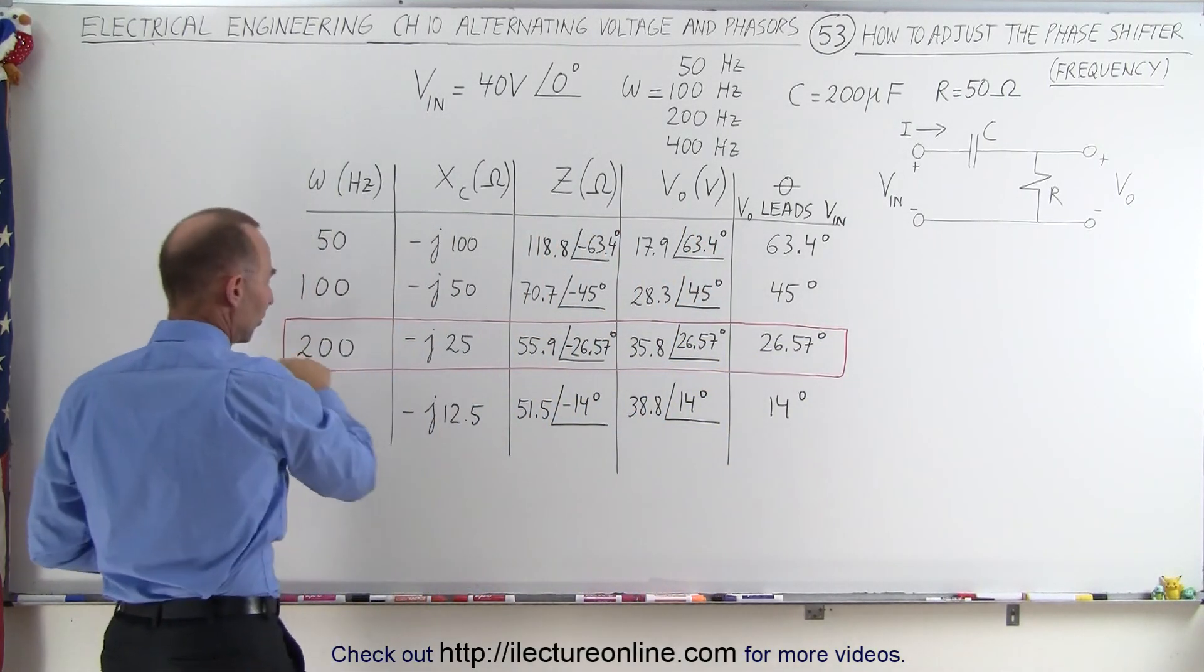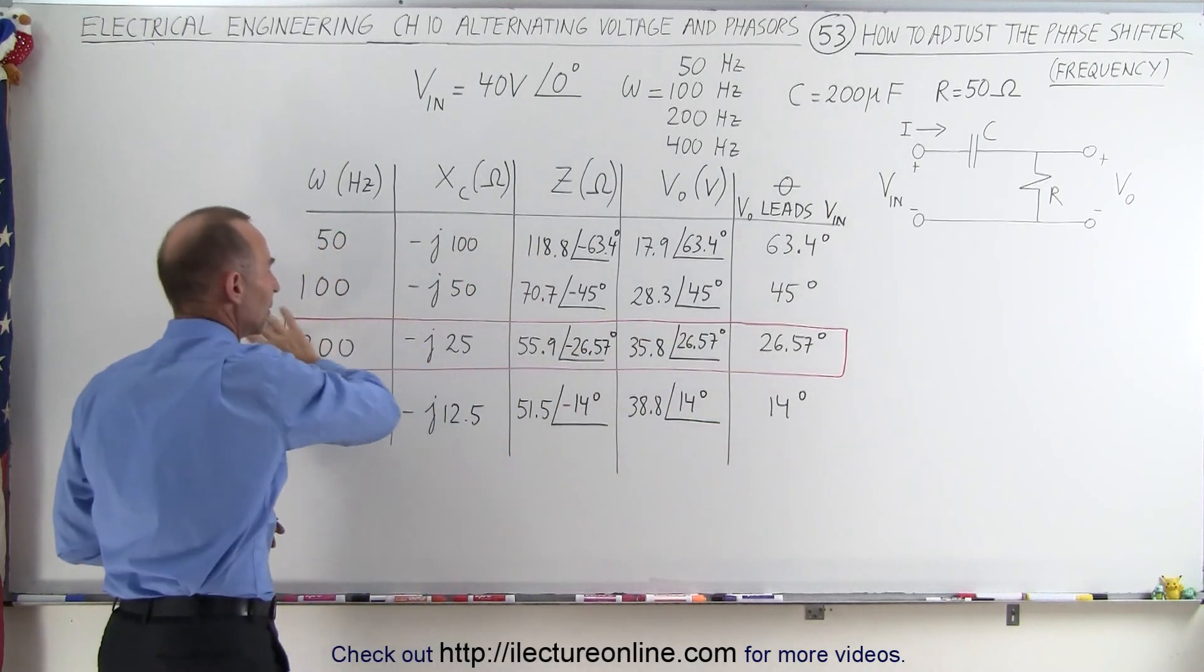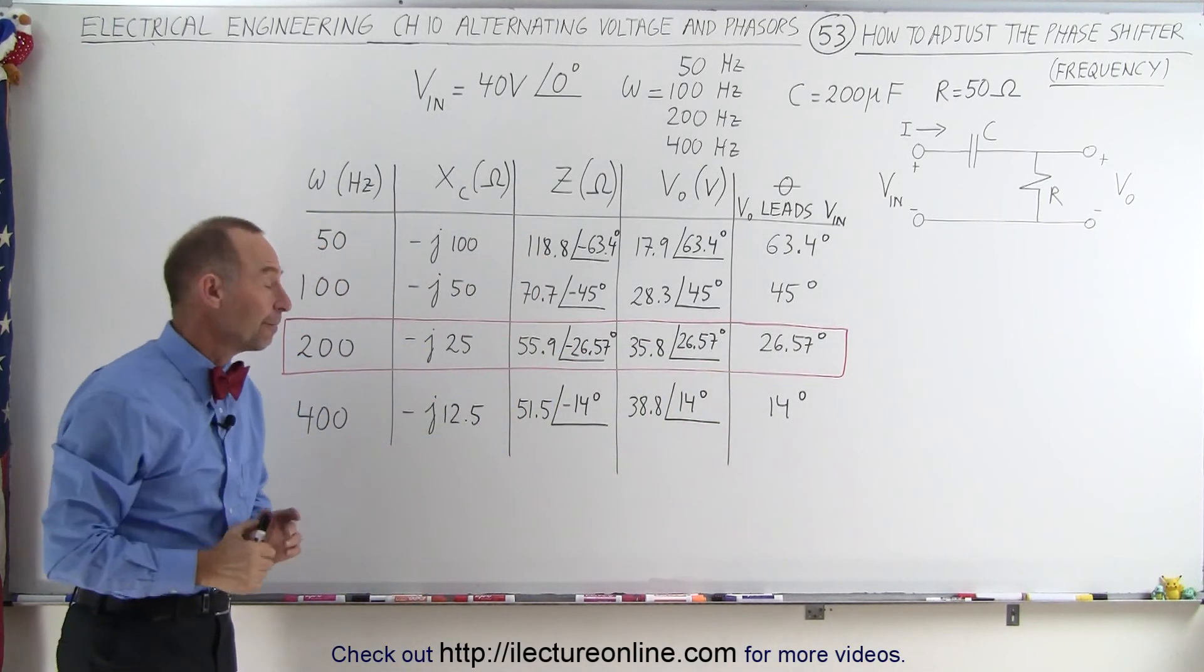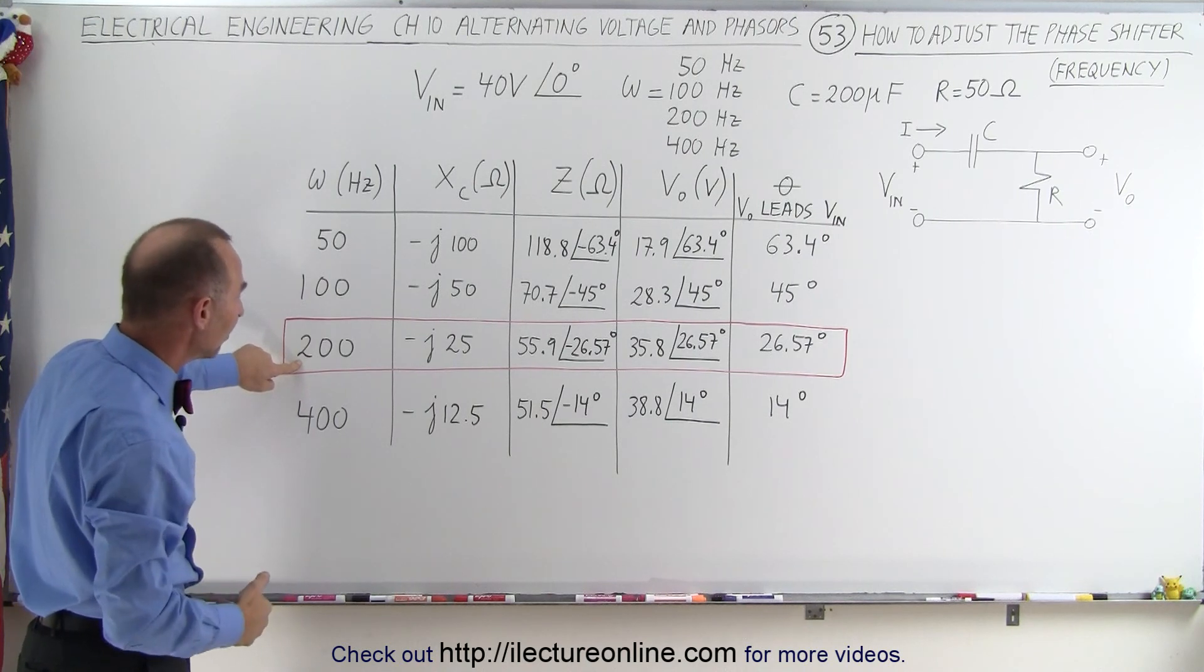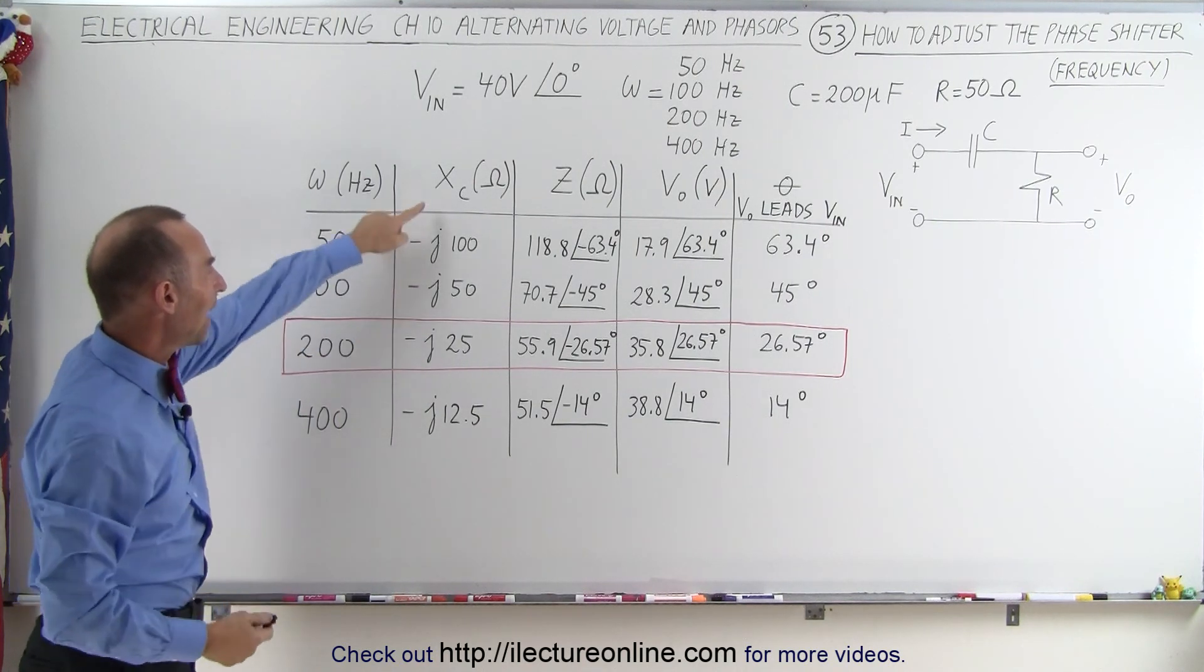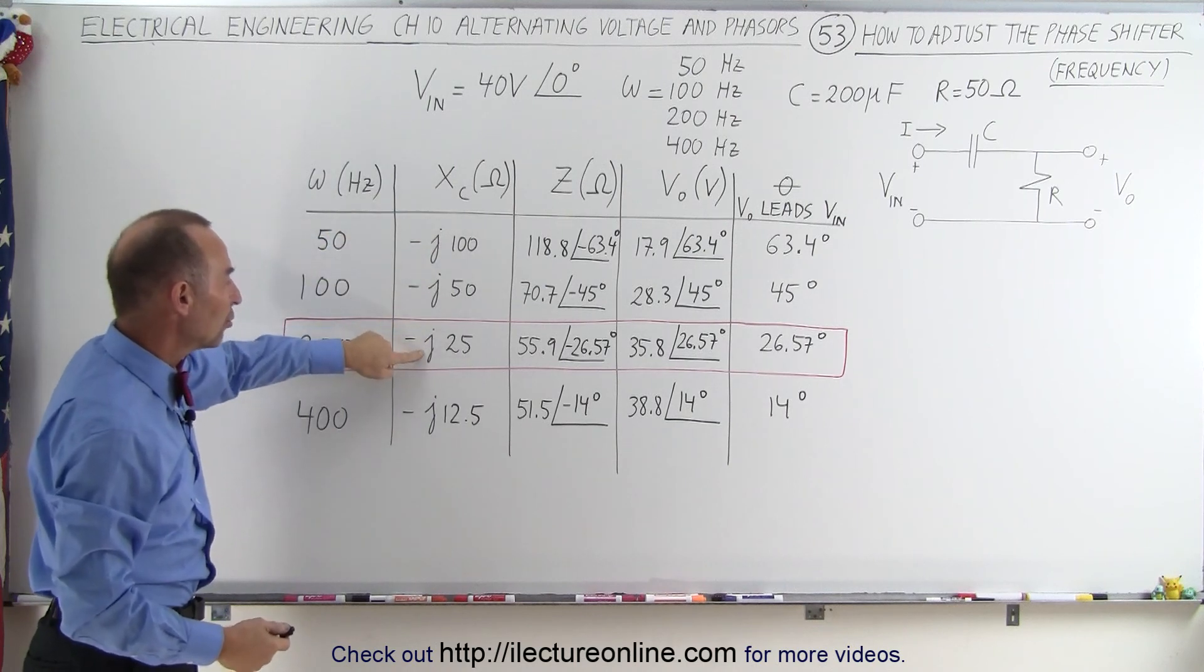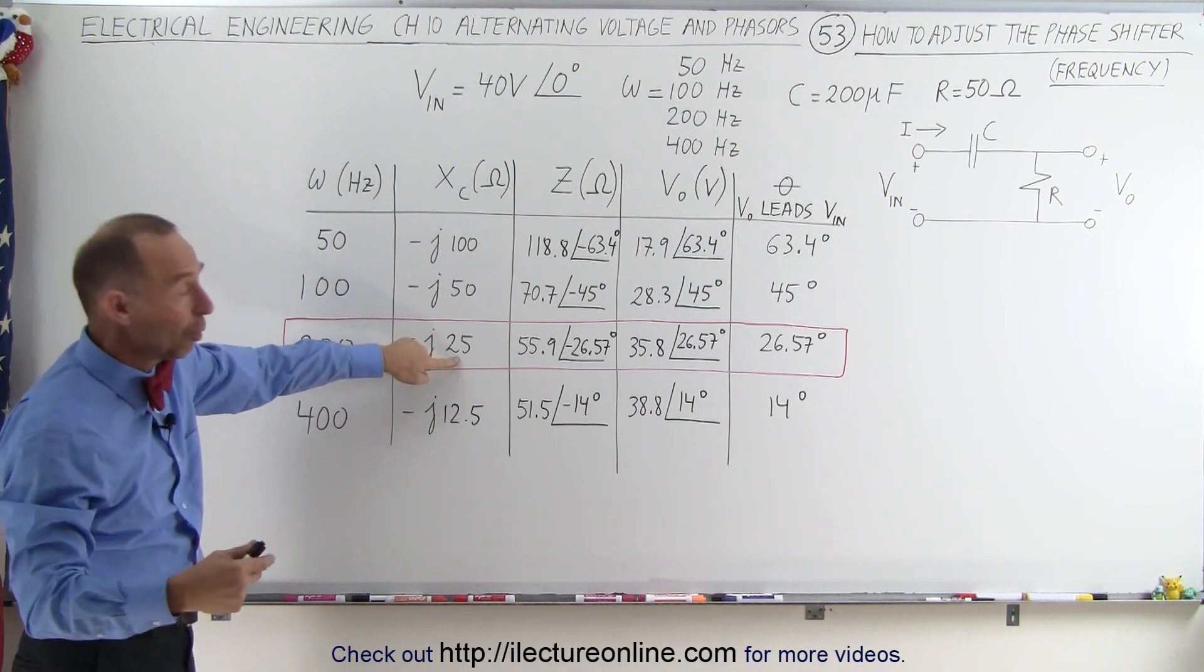Now, what I have here boxed in red here, this is the example that we did last time. We had a frequency of 200 Hz, an angular frequency of 200 Hz, which gave us a capacitive reactance of minus J25, 25 ohms in the negative 90 degree direction.